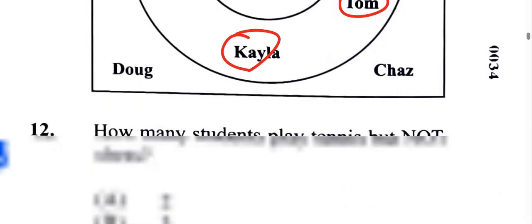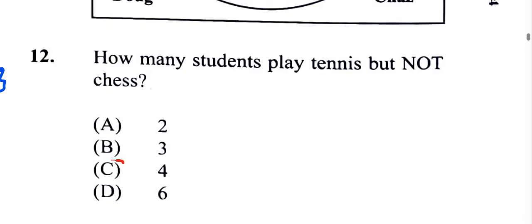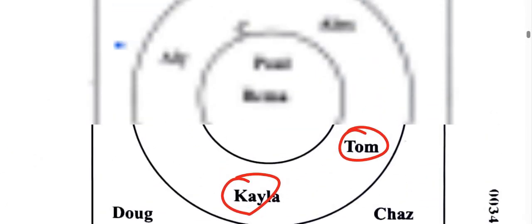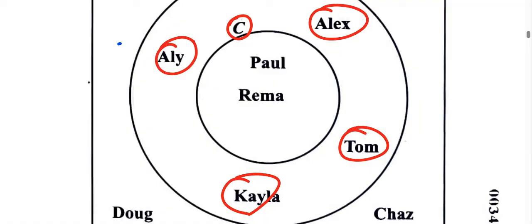So it's four persons, so item 12 is C. We would not include these guys outside of both sets because they play neither tennis nor chess.